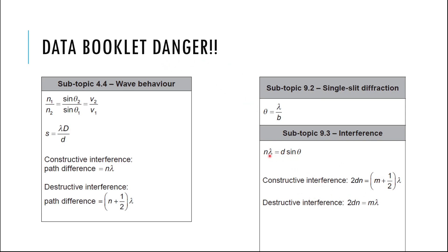Be very careful knowing which equations to use. The thin film equations are only for thin film problems. The generic interference equations work for most other setups. The double-slit or two-source equation relates all the relevant distances. Know what each equation is, where to find it, and critically — when not to use it. Knowing your data booklet thoroughly gets you at least halfway to success.